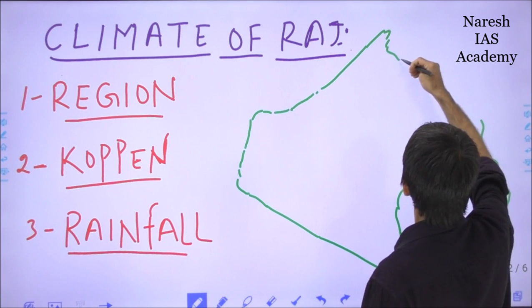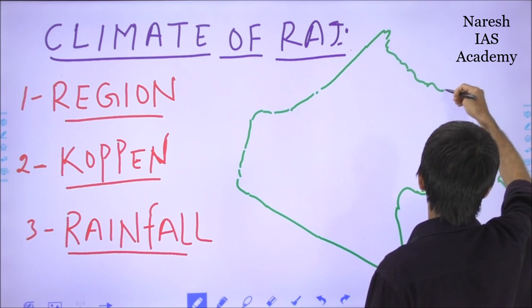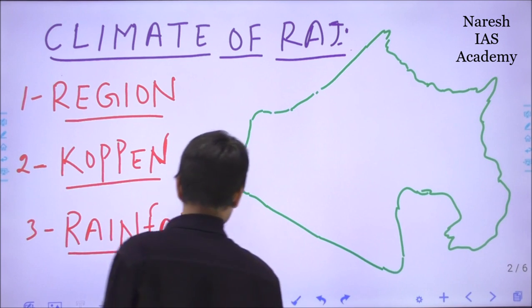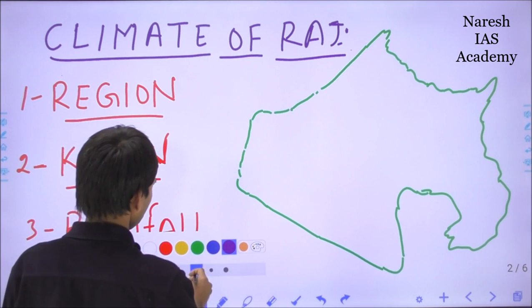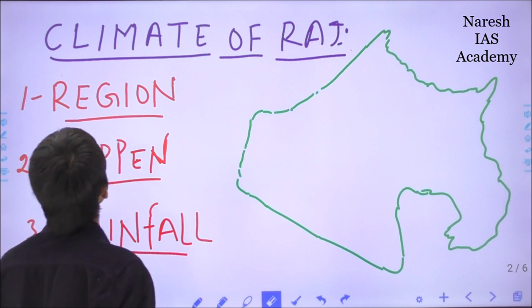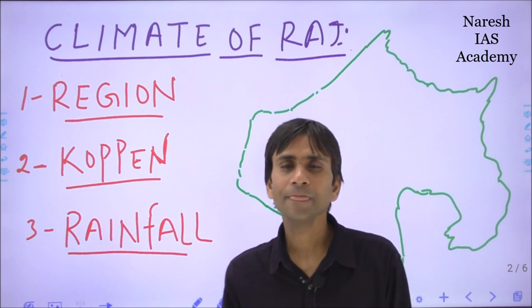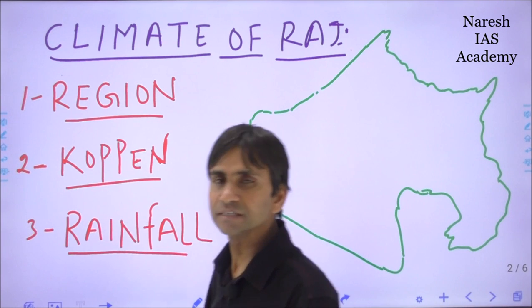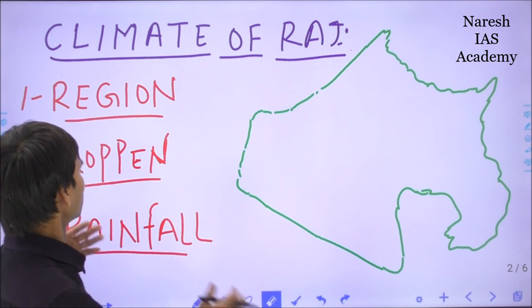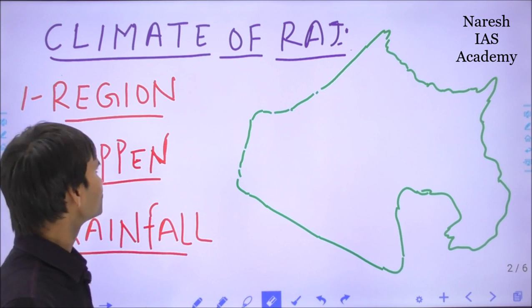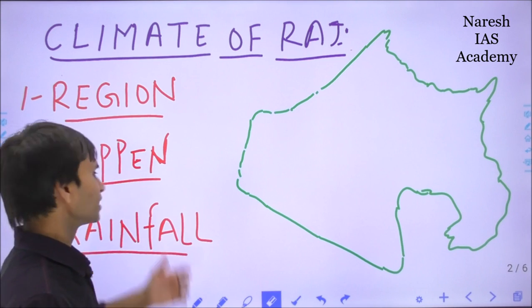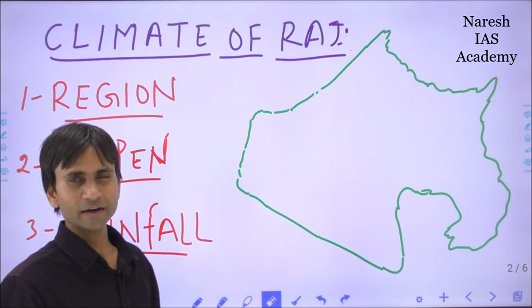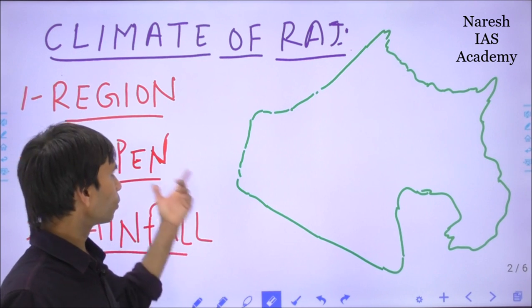Through the map we can make our interpretation more scientific and understandable. Rajasthan is divided into four climatic regions. Koppen, Trivarta, and Thornthwaite have also divided Rajasthan into four climatic regions.